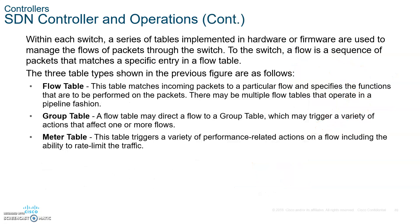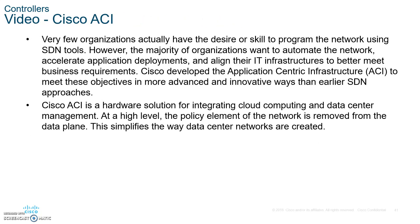Within each switch you have a series of tables. On each switch you have the flow table, the group table, and the meter table. The flow table is where incoming packets are matched to a particular flow, and it specifies the functions to be performed on those packets. There may be multiple flow tables operating in a pipeline fashion, followed by the group table and then the meter table.